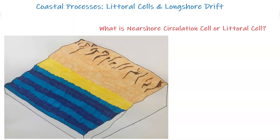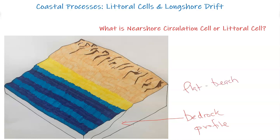What is a nearshore circulation cell or a littoral cell? We have a basic schematic of a coastline or coastal zone — an area of interaction and meeting place between the water body and the land. We have the bedrock and a certain profile of the beach. In this case, we have a flat beach, which could be a passive margin where tectonics are basically far away.